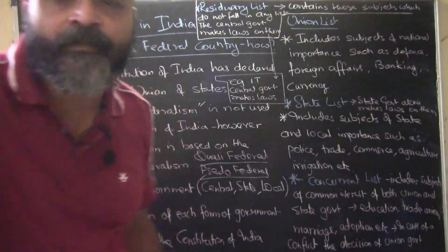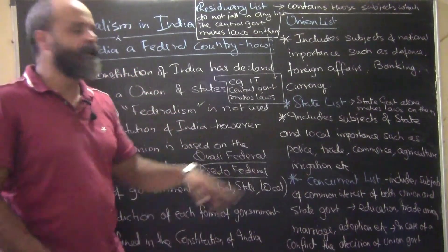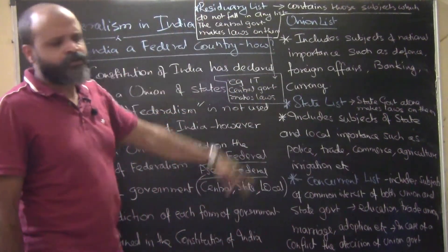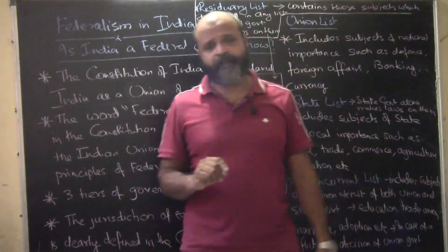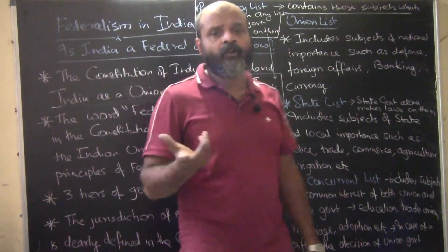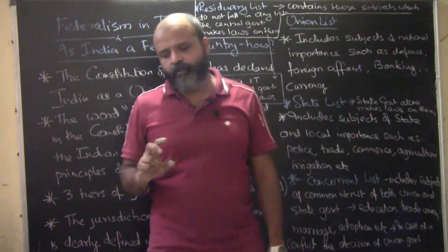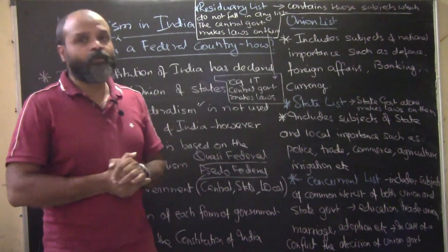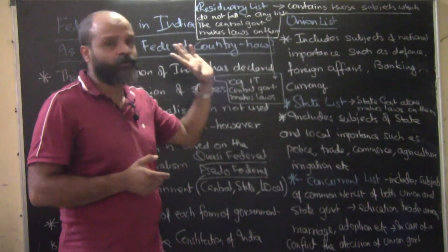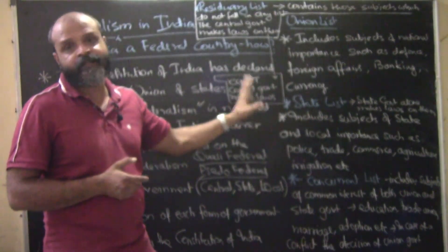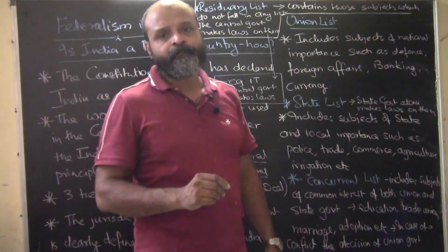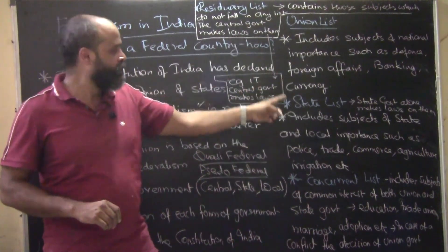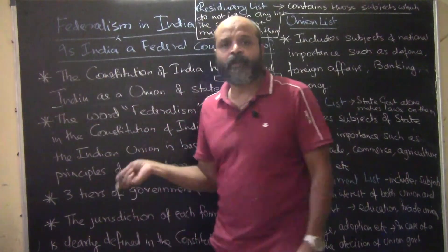The last list is the Residuary List, which contains those subjects that do not fall in any of the other three lists. Things change over time — for example, 50 years ago we didn't have information technology or computers. The IT department and IT cell fall under the Residuary List, and the central government makes laws on them. The Residuary List refers to recently developed subjects — decisions and laws on them are made by the central government.